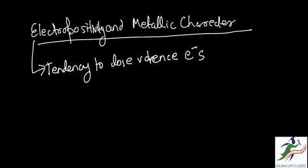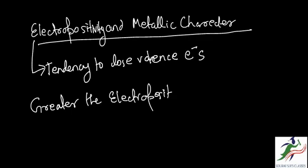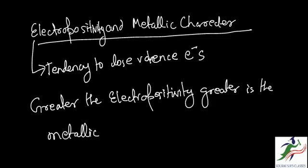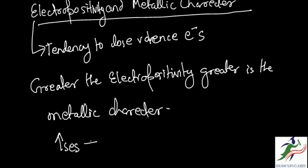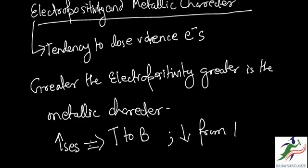Now greater the Electropositivity, greater is the Metallic Character. Electropositivity increases on moving down a group, that is increases from top to bottom, and decreases from left to right.